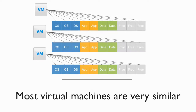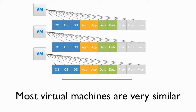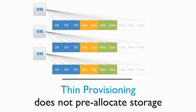While each virtual machine is unique, there is a high level of commonality between the virtual machines in a data center. Storage savings can be actualized by deploying virtual machines on thin-provision virtual disks. With this technology, the free space that's normally associated with a virtual disk is not pre-allocated. Instead, it is allocated on demand.